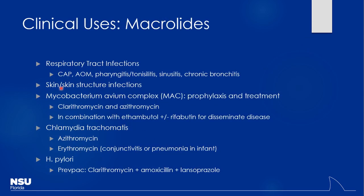A fascinating story: the Australian doctor who discovered H. pylori as a cause of peptic ulcers couldn't get anyone to believe him, so he drank the bacteria, gave himself an ulcer, took antibiotics, and the ulcer went away — he won the Nobel Prize for it. Clarithromycin is part of that H. pylori treatment regimen.